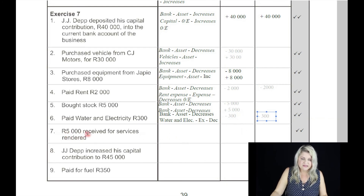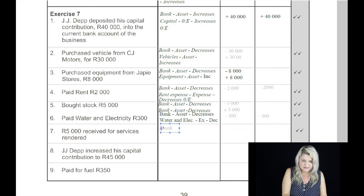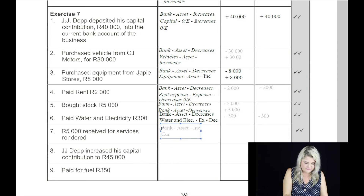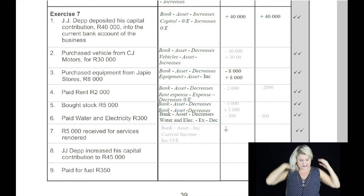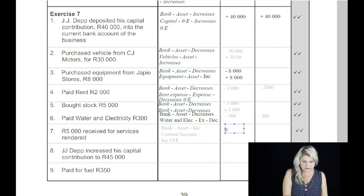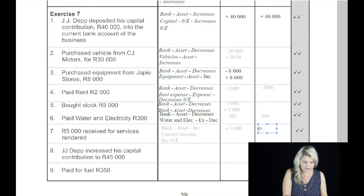Received on the seventh: 5,000 Rand received for services rendered. Services rendered is a current income, and income always increases owner's equity. Where are we going to put the money? Into the bank account. The bank account is an asset and so the asset is going to increase. The other account is current income, which is an income, and it will increase owner's equity. So the bank will be increased by 5,000 Rand, and because it's an income, its effect on owner's equity is also 5,000 Rand.